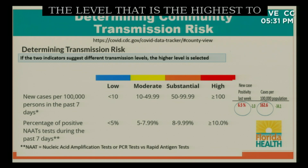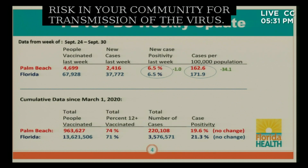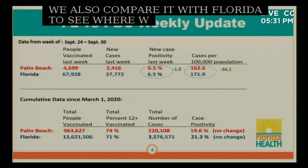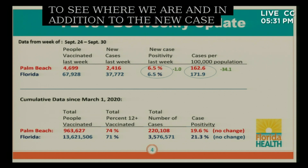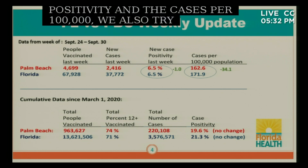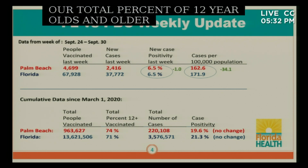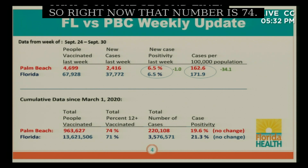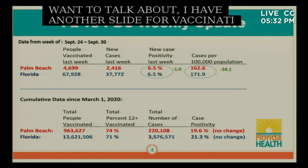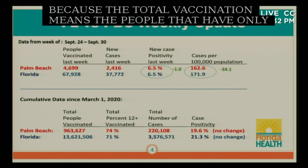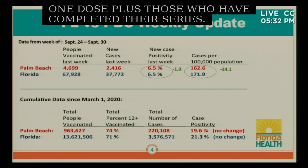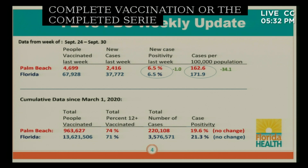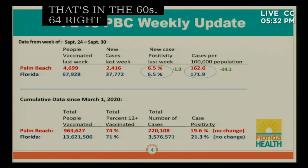This is the rest of the data for Palm Beach County. We always compare it with Florida to see where we are. In addition to new case positivity and cases per 100,000, we also look at the total percent of 12-year-olds and older that are vaccinated — that number is currently 74 percent. However, what we really want to look at is the completed vaccination series, not just one dose. The completed series is in the 60s — 64 percent right now. We report the total vaccine number because it's higher, but the completed series is the more meaningful figure for protection.